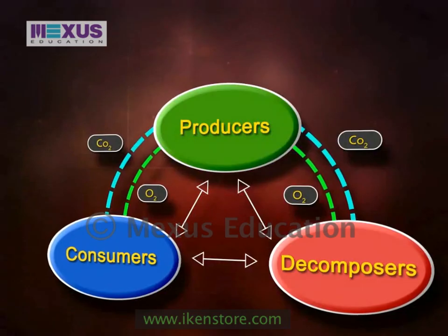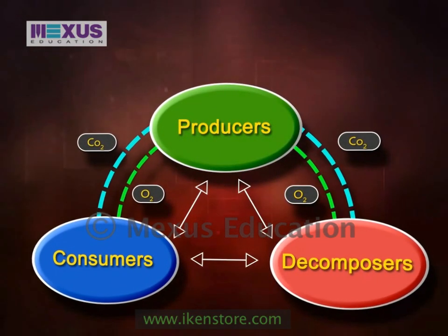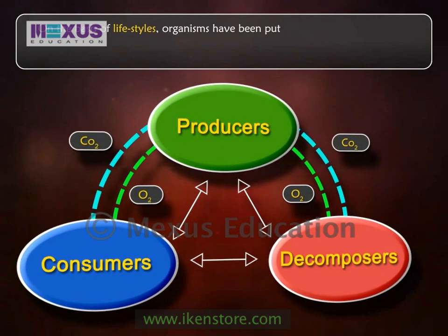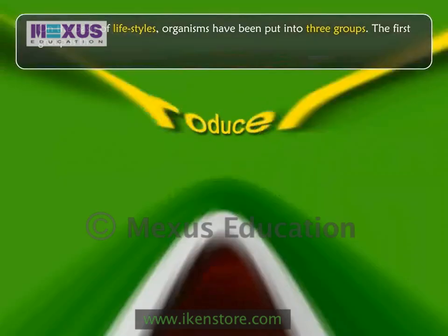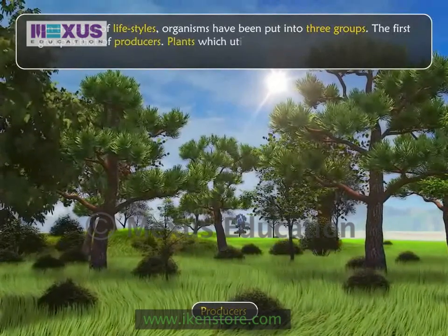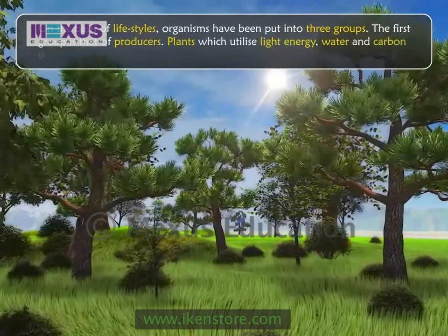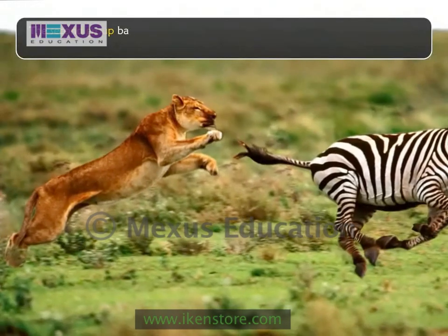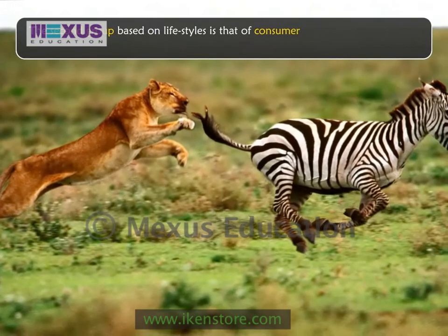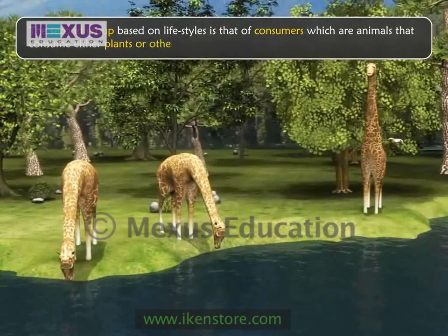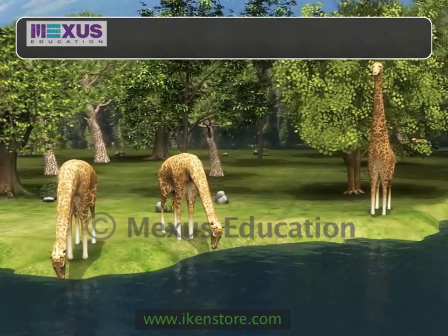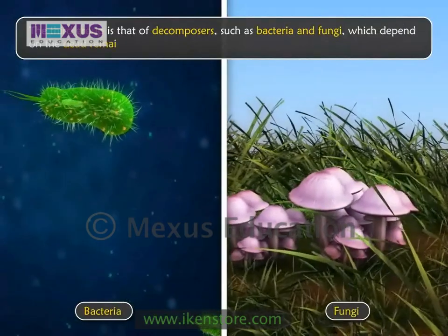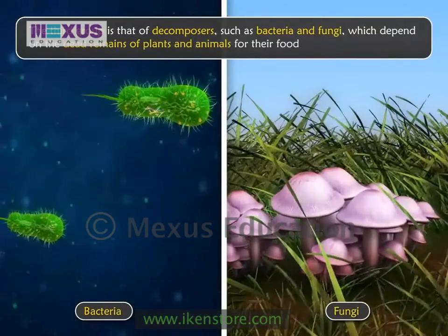The fourth factor considered while making this five kingdom system is the lifestyle. On the basis of lifestyles, organisms have been put into three groups. The first group is that of producers — plants which utilize light energy, water, and carbon dioxide to synthesize their organic food. The second group is that of consumers, which are animals that consume either plants or other animals to survive. The third group is that of decomposers, such as bacteria and fungi, which depend on the dead remains of plants and animals for their food and decompose them.